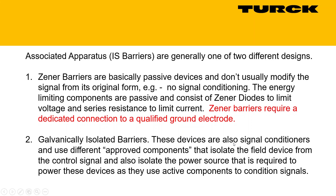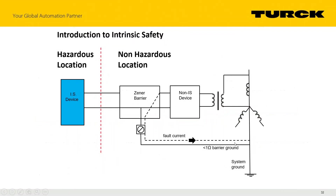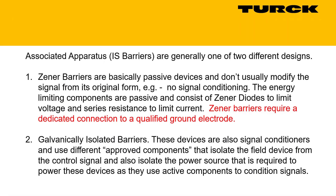Galvanically isolated barriers are isolated by transformers or optocouplers — sometimes both — to at least 1500 V isolation. They don't need to be grounded. They can accommodate all sorts of signal conditioning because they already incorporate complex electronics, and they eliminate the dedicated ground requirement. They're tailored to specific applications and generally easy to implement.